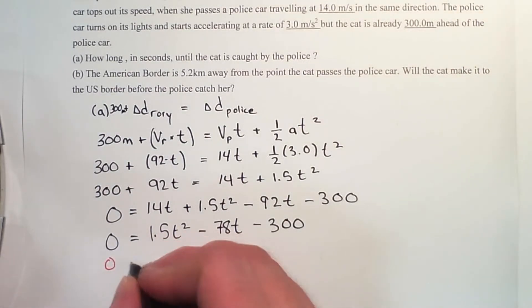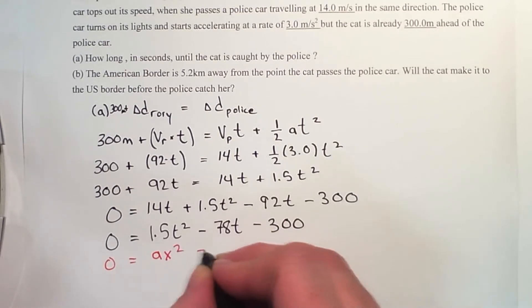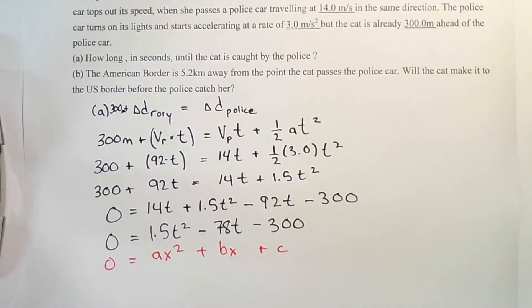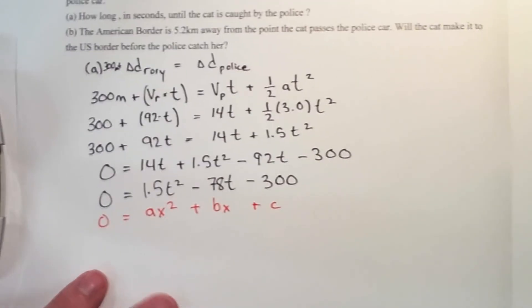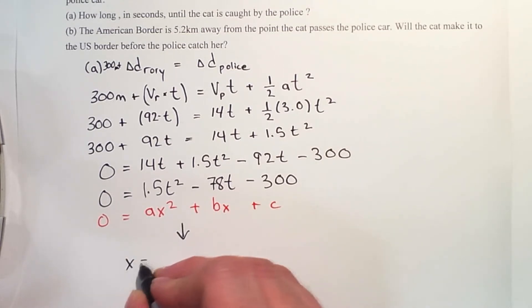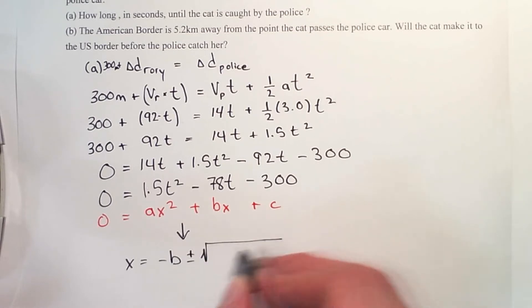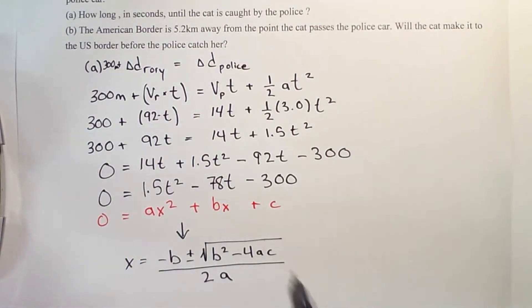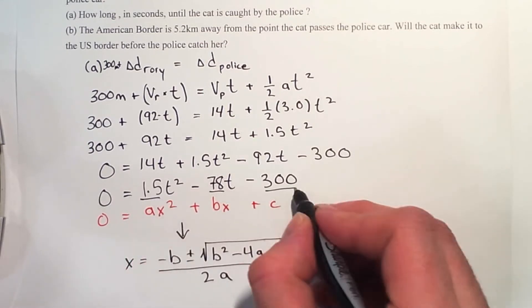So this is now in the correct form. Zero equals ax squared plus bx plus c, where obviously our x's are equal to t's. Well, we're just looking for time, and we know that we have a quadratic formula here. There's a couple different ways we can solve it. So the most common one is the quadratic formula, where this is our b term, this is our a term, and that is our c term.